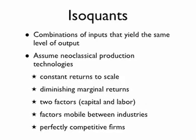Isoquants are a useful way to depict various aspects of a firm's decision on what type of inputs to use in order to maximize profits. Isoquants are defined as combinations of inputs that yield the same level of final output. For the particular versions we will be using, we will assume that the firms have neoclassical production functions — that is to say, they exhibit constant returns to scale and diminishing marginal returns to an individual factor.